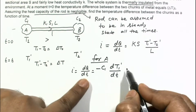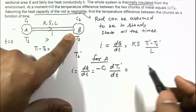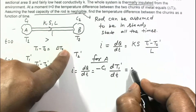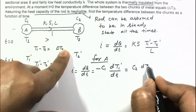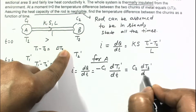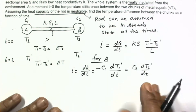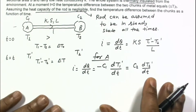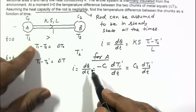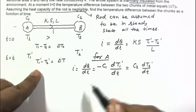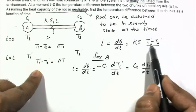The same dQ by dt flows through the rod and into chunk B. Since chunk B's temperature is increasing, it can be written as C2 times dT2 dash by dt, which also equals I. Our focus should be on finding an expression for the temperature difference.